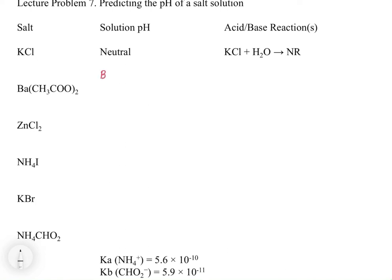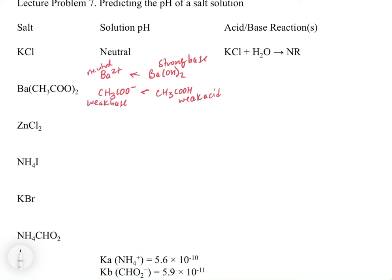With barium acetate, our two ions are Ba²+ and acetate. Barium comes from barium hydroxide, which is a strong base - so the barium ion is neutral. Acetate comes from acetic acid, a weak acid, so acetate is a weak base. We identify this as a basic salt. The acid-base reaction is: CH3COO⁻(aq) + H2O ⇌ acetic acid + OH⁻.